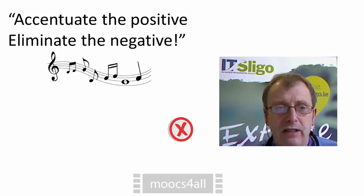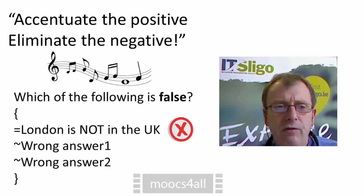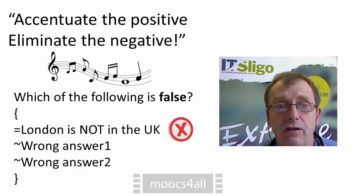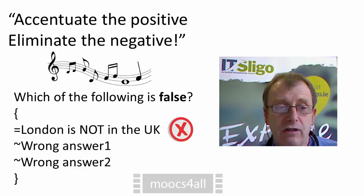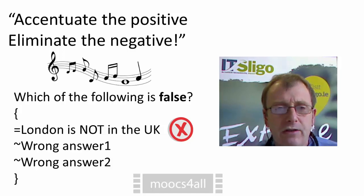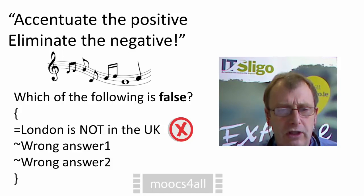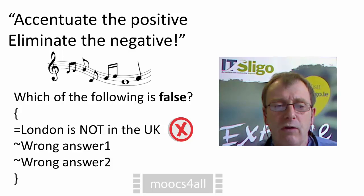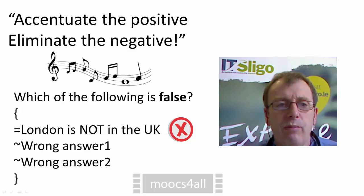Accentuate the positive, eliminate the negative. If you have negatives in questions, it can confuse students. Generally you have to use them sometimes, but one thing you must avoid is double negatives. For example: 'Which one of the following is false? London is not in the UK.' It takes students extra thinking to work through that logic, and remember you're often not testing them on logic — you're testing them on geography. So avoid double negatives as they confuse and make questions unnecessarily difficult.